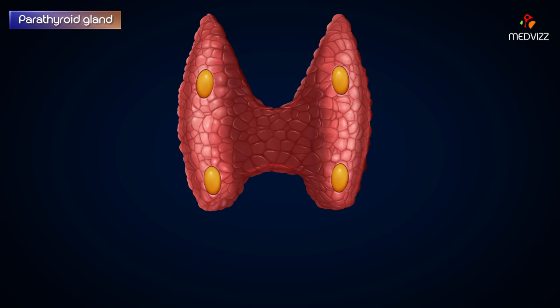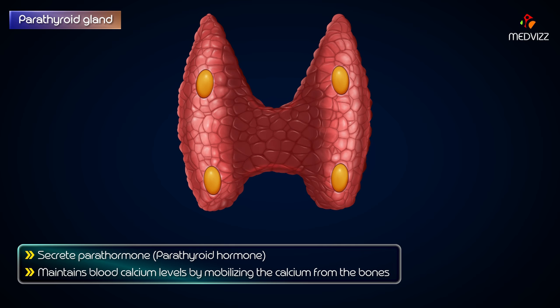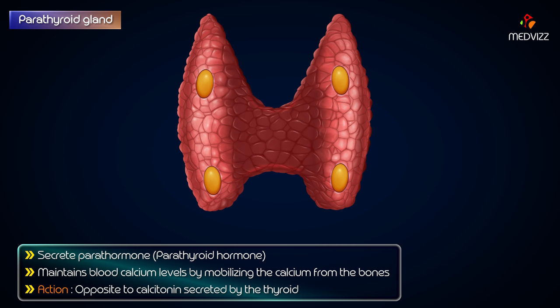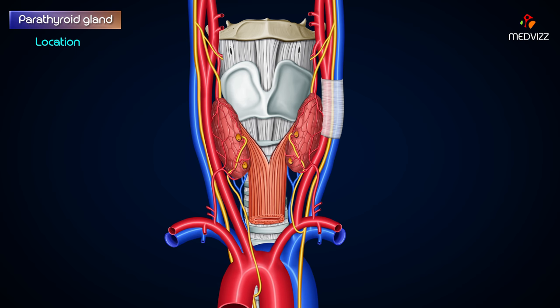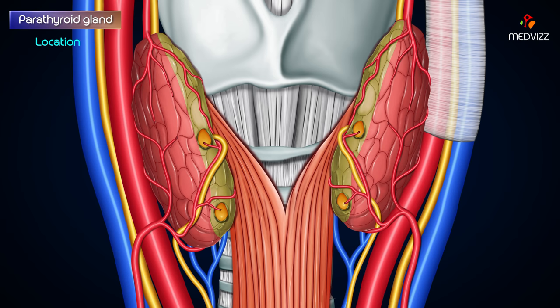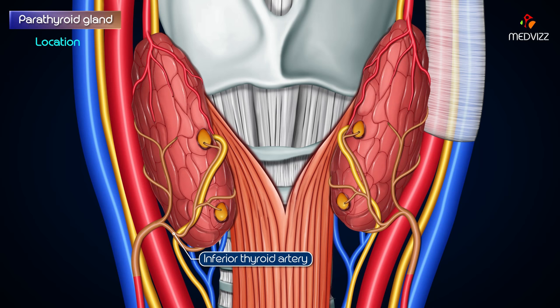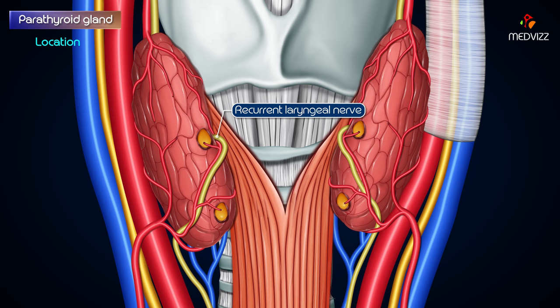The parathyroid glands secrete parathormone, which maintains blood calcium level by mobilizing the calcium from the bones. Its action is opposite to that of calcitonin secreted by the thyroid. The superior parathyroid lies at the middle of the posterior border of the thyroid lobe, above the level at which the inferior thyroid artery crosses the recurrent laryngeal nerve.